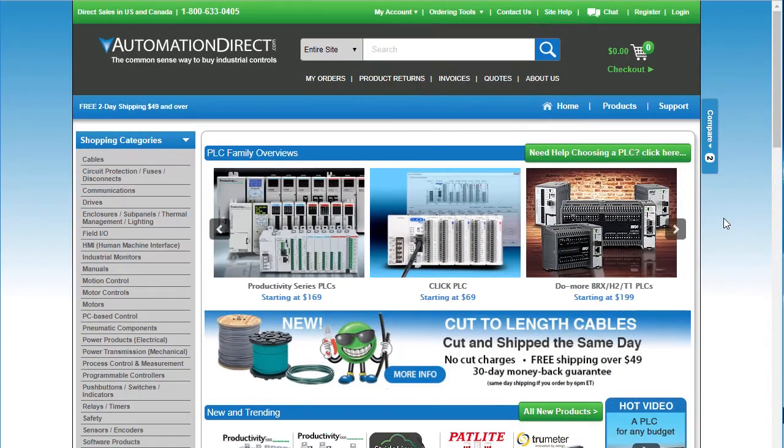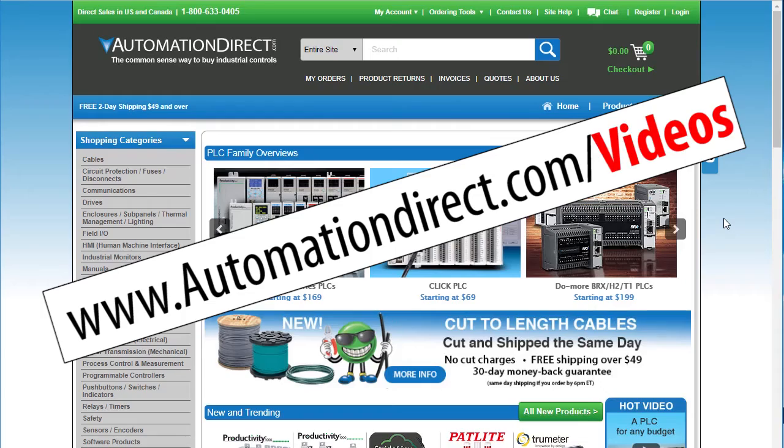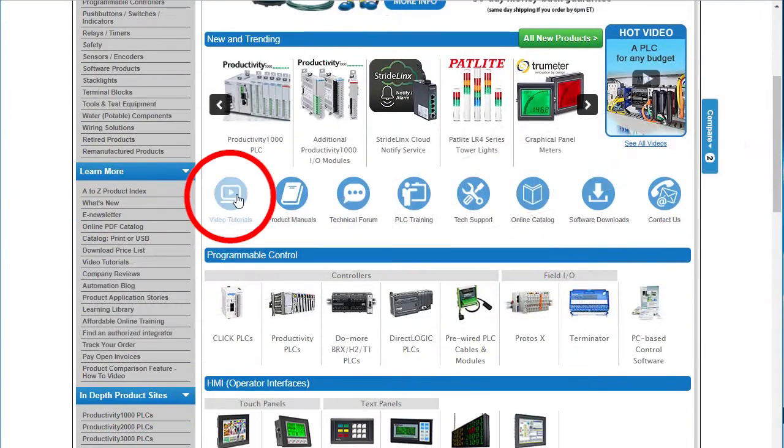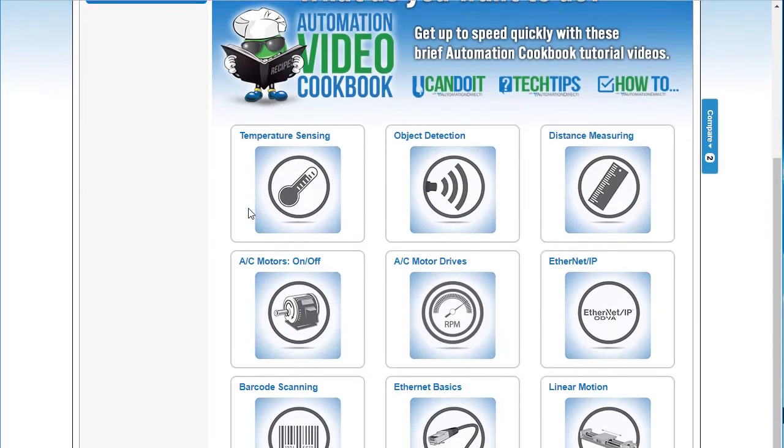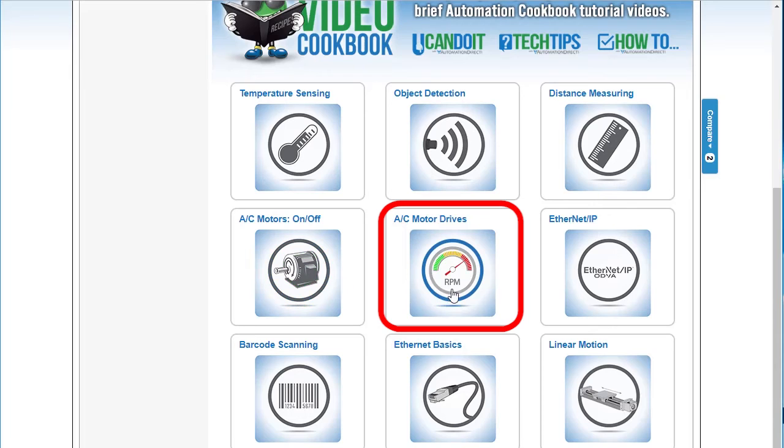And finally, be sure to check out all of our drive videos at AutomationDirect.com/videos or just click on the video button. There are over a thousand videos here so just search for what you want to get all kinds of video tutorials on AutomationDirect products. Or better yet, go to the video cookbook and click on the AC Drives chapter to only see videos about drives. We add new videos all the time so check back often.